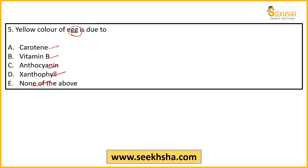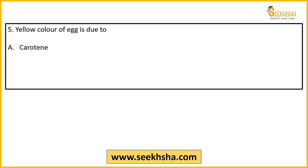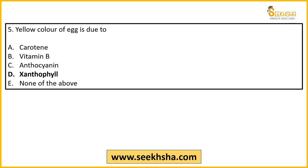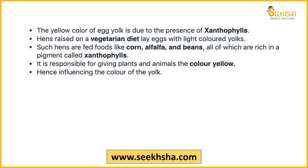This is a basic general knowledge question, not specifically an agriculture expertise question. The answer is Option D — xanthophyll. Hens are generally given vegetarian diets when they are egg-laying. In that vegetarian diet, alfalfa and beans are given, and all these compounds are rich in xanthophyll, which provides yellow pigment. Because the animal is consuming this, the color of the yolk also appears yellow. Simple concept — remember xanthophyll.